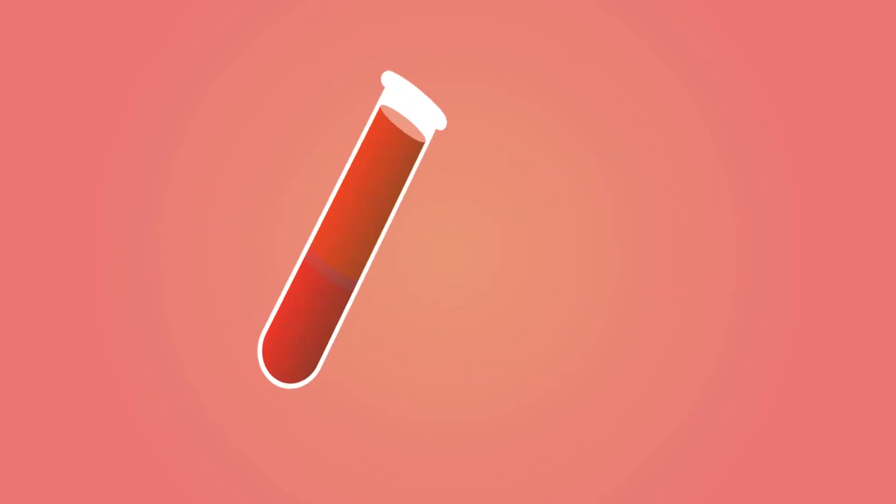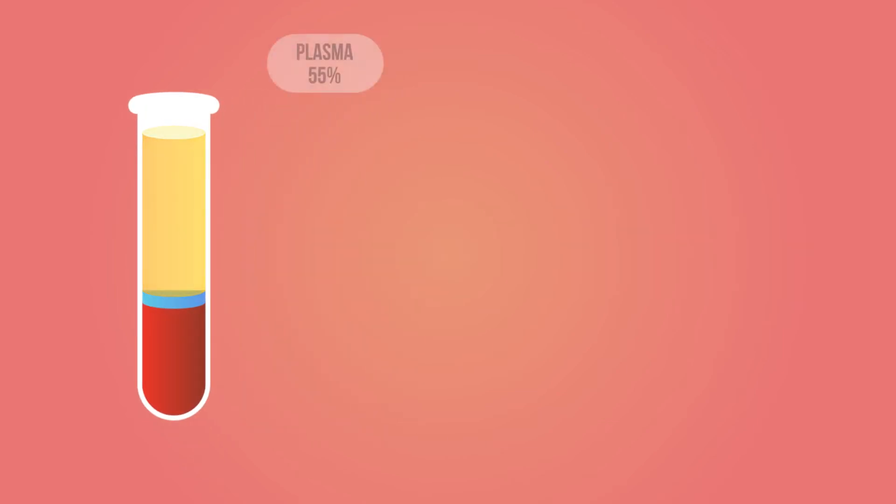If you were to spin a blood sample really fast or centrifuge it, you would soon find that plasma makes up about 55% of the volume of blood.